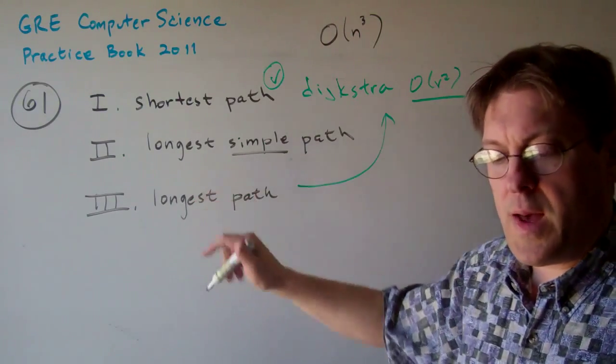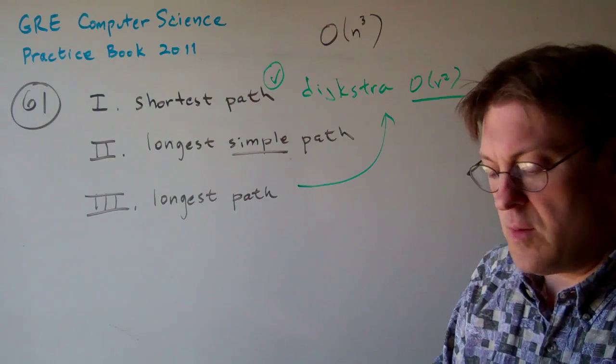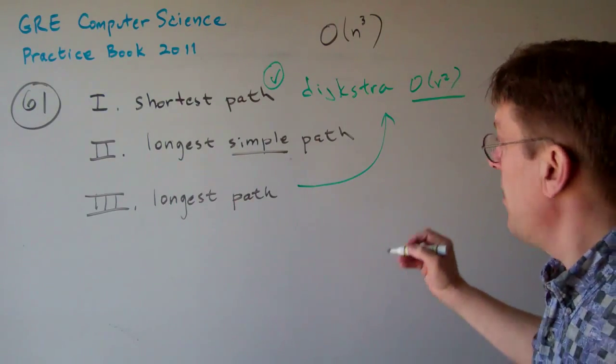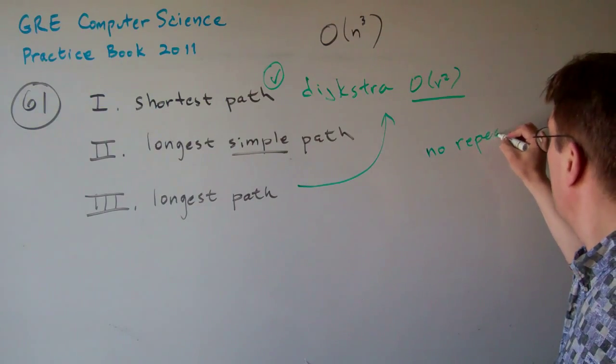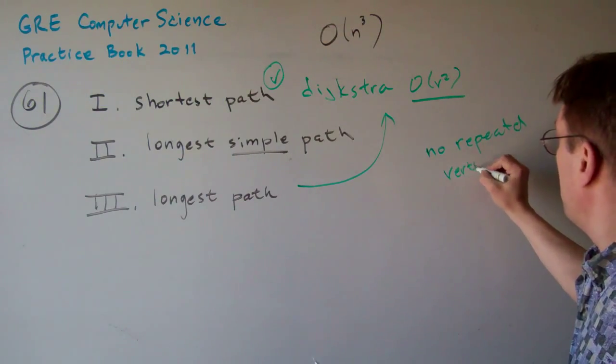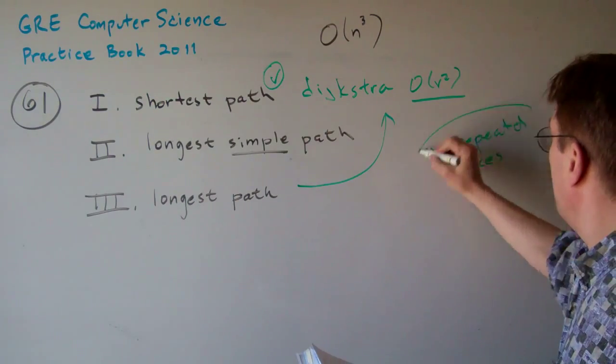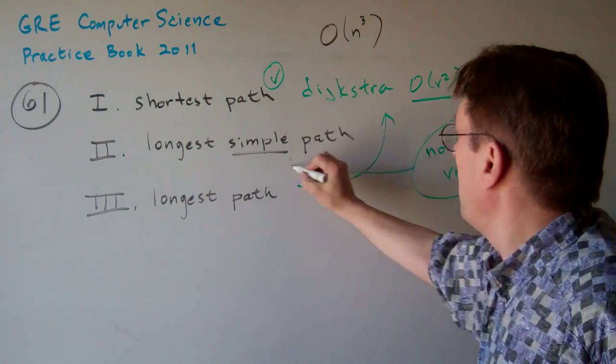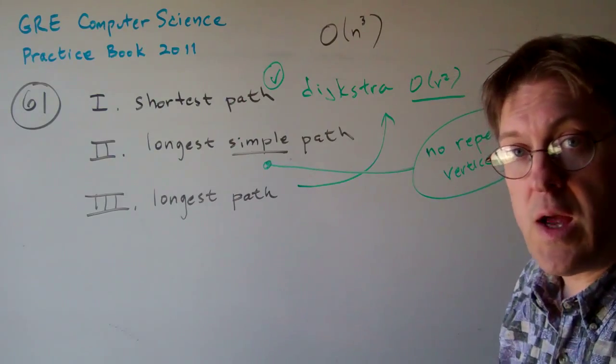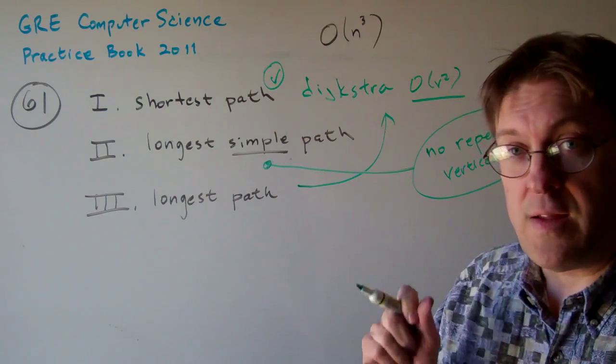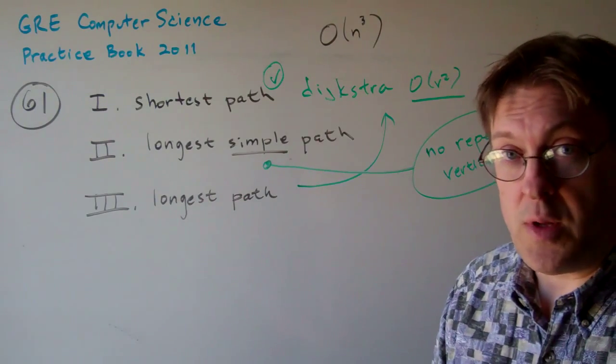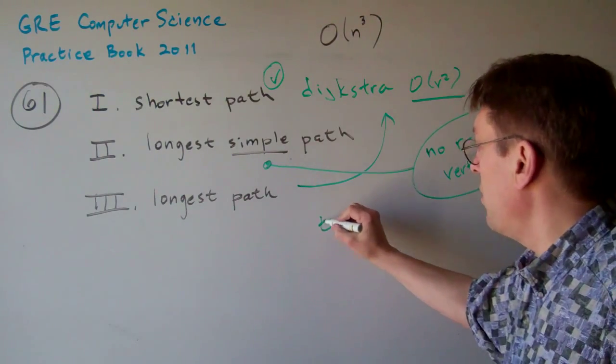The trick is in the longest simple path. What is the longest simple path? The longest simple path means no repeated vertices. In other words, you go through the entire graph, but you only touch each vertex once. That is not a polynomial time problem. It's the famous traveling salesman problem.